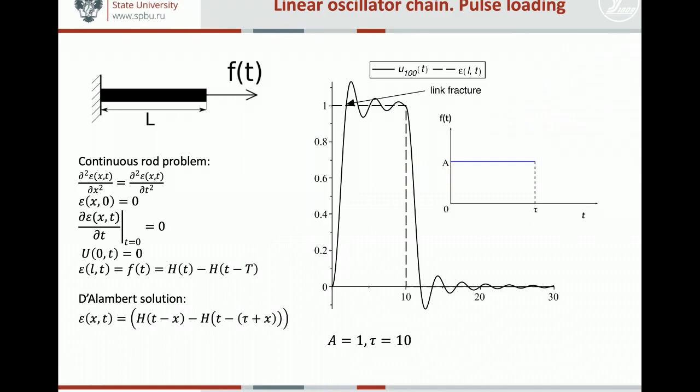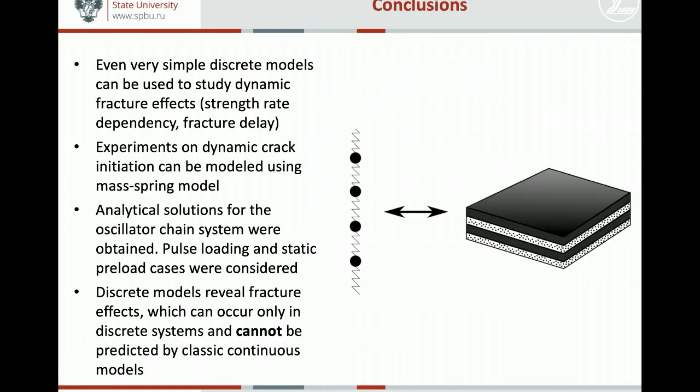So again, we see a difference here between two systems: a continuous system, an elastic rod, and a discrete analog of this system, a chain of oscillators. This leads us to the conclusions of our work.